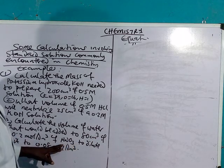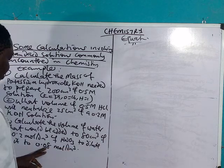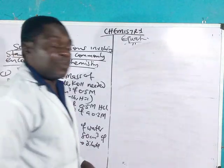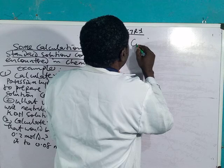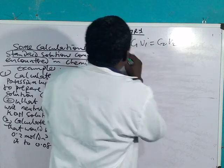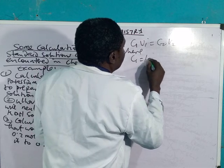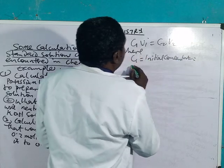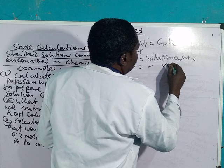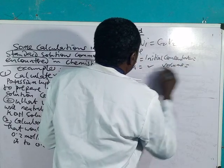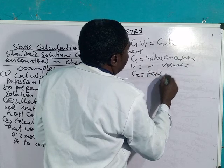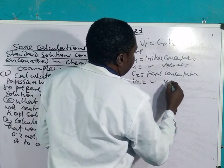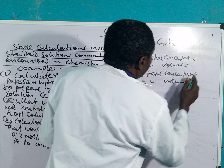The third one says: calculate the volume of water that will be added to 80 cm³ of 0.2 mole per dm³ HNO₃ to dilute it to 0.08 mole per dm³. As you can see, you use the dilution formula, which is C₁V₁ equals C₂V₂, where C₁ equals initial concentration.